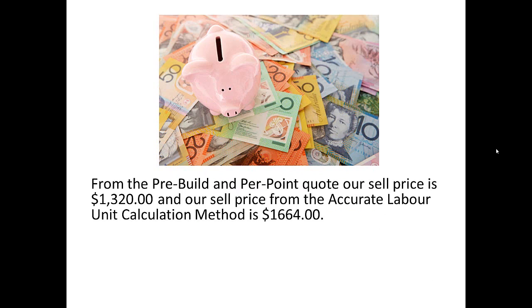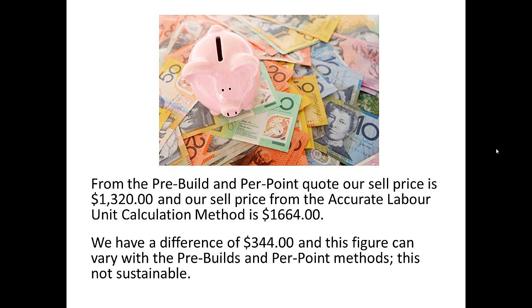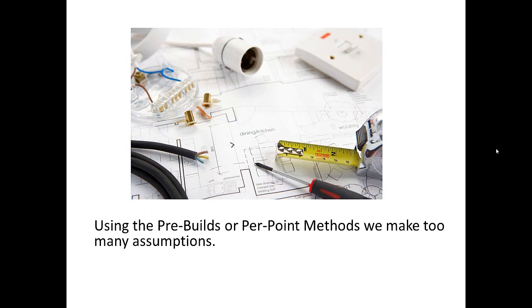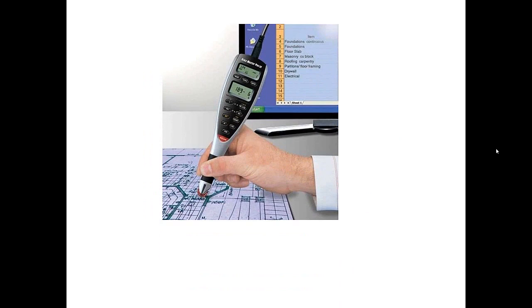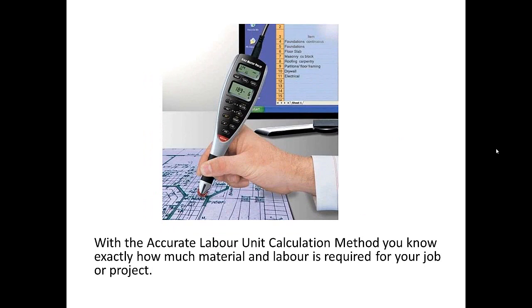From the pre-billed and per-point quote, our sell price is $1,320, and our sell price from the accurate labour calculation method is $1,664 — a difference of $344. This figure can vary with the pre-bills and per-point methods, and this is not sustainable. Using the pre-bills or per-point methods, we make too many assumptions. With the accurate labour unit calculation method, you know exactly how much material and labour is required for your job or project.